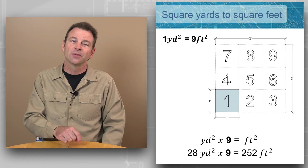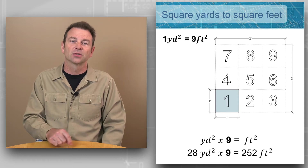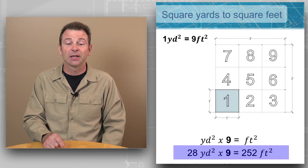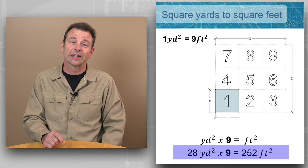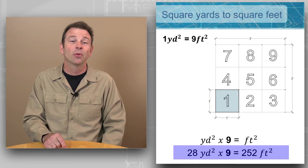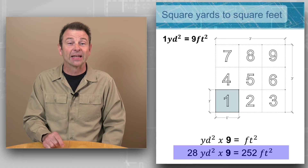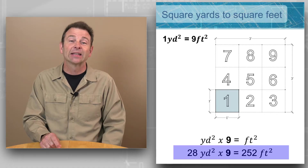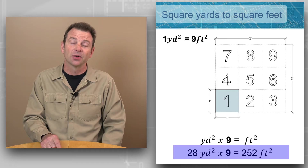We can also convert square yards to square feet. This time we're going to multiply: we'll take 28 square yards, multiply that times that factor of nine, and that's going to equal 252 square feet.